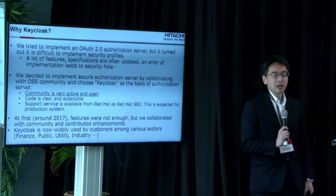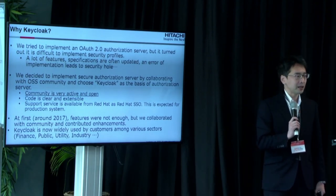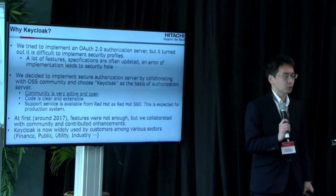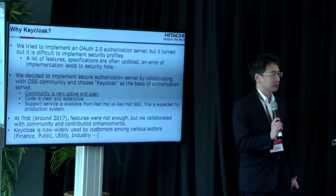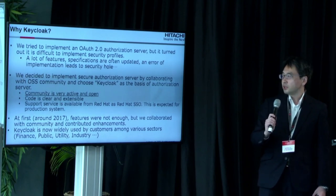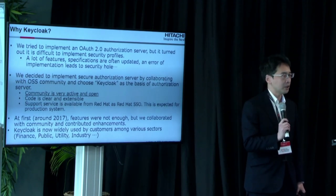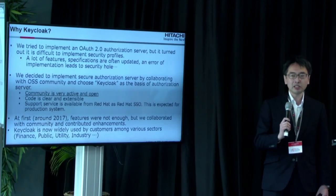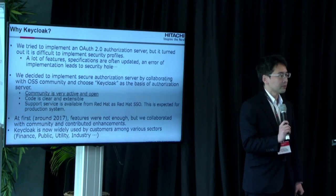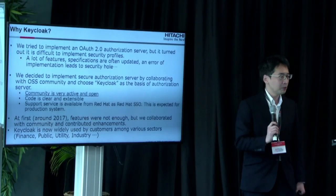Why Keycloak? We tried to implement an OAuth 2.0 authorization server, but it is very difficult, because there are a lot of features, the specifications are often updated, and an error in implementation leads to a security hole. So we decided to implement a secure authorization server by collaborating with the OSS community, and we chose Keycloak. The biggest reason is that the community is very active and open, the code is very clear and extensible, and support service is available from Red Hat for production systems.